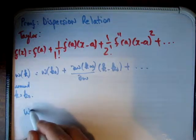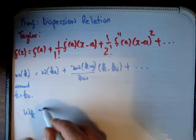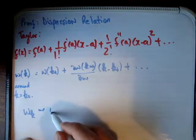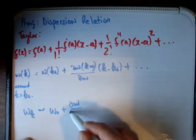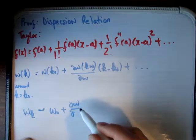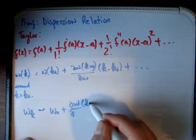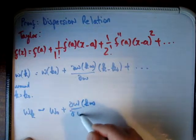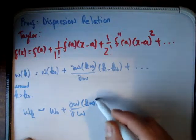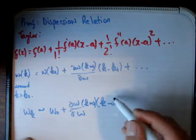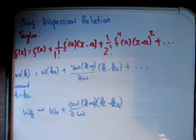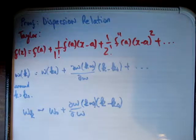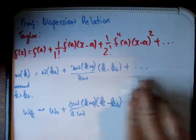Therefore omega sub k is approximately omega₀ plus d omega dk evaluated at k₀, times k minus k₀. That's just to show you how to apply a Taylor expansion. You're going to need something similar to that in proving this.